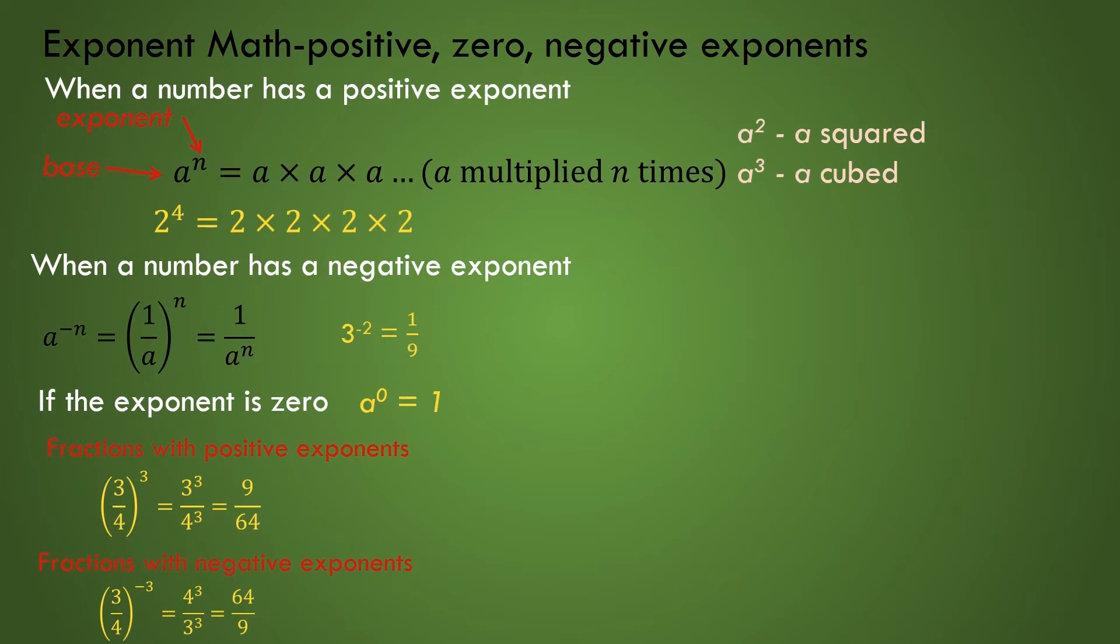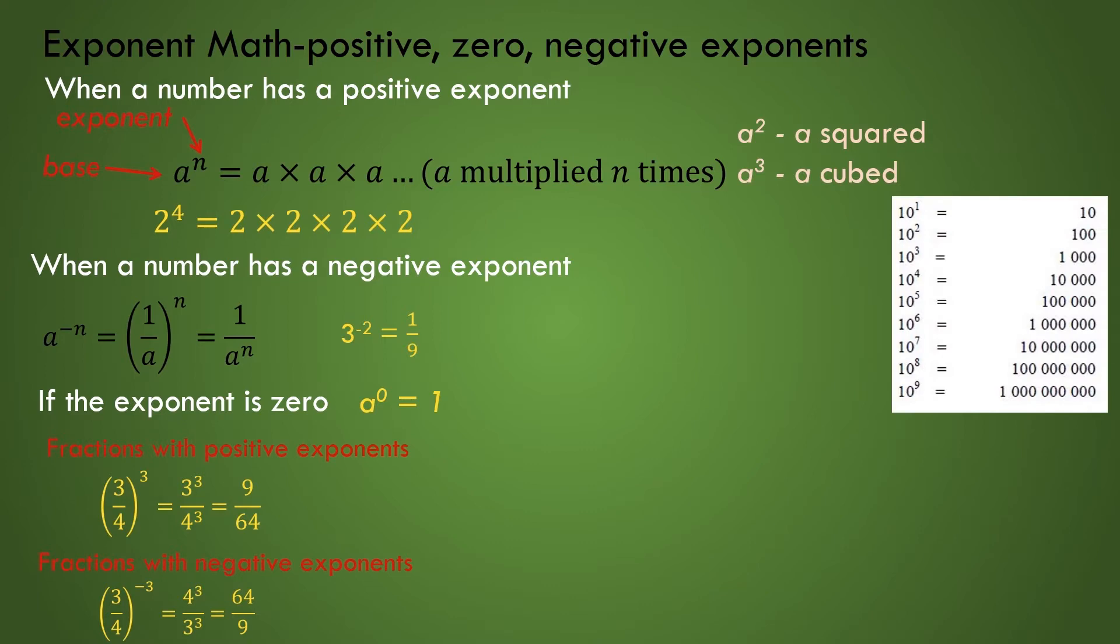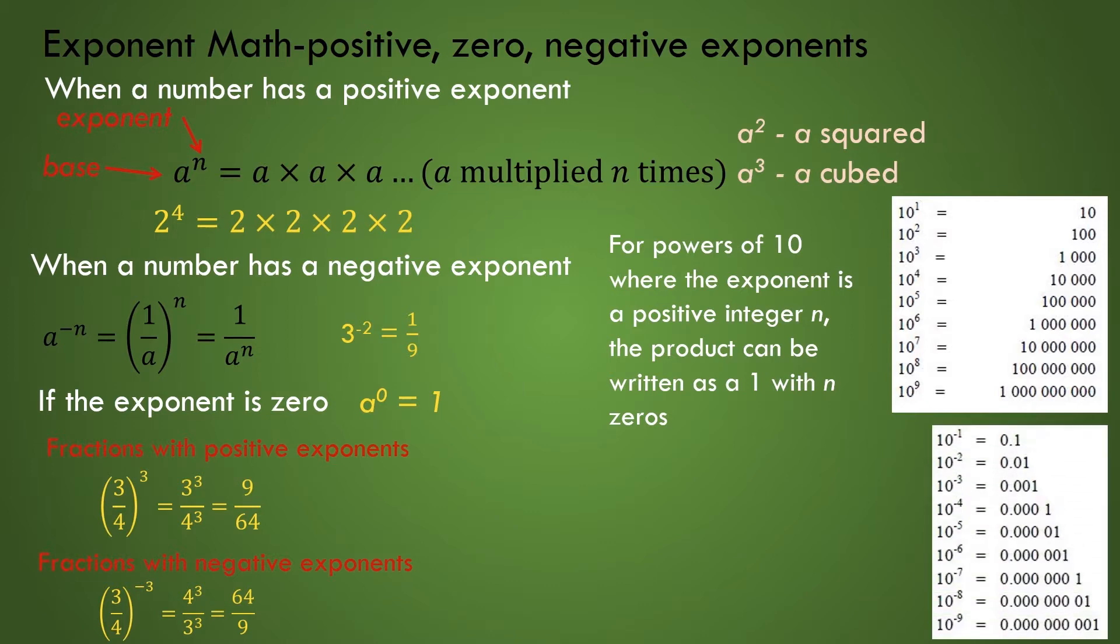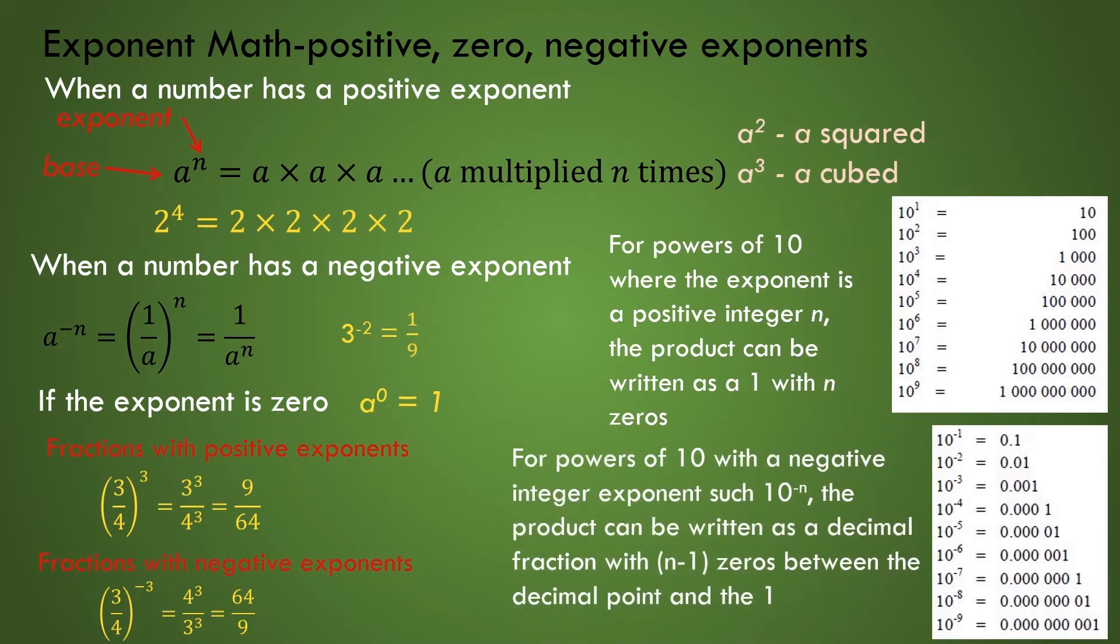Now, it is prudent for us to look at example exponential numbers where the common base is the value 10. For powers of 10 where the exponent is a positive integer n, the product can be written as a 1 with n zeros. For powers of 10 with a negative integer exponent such as 10 to the power of minus n, the product can be written as a decimal fraction with n minus 1 zeros between the decimal point and the 1.